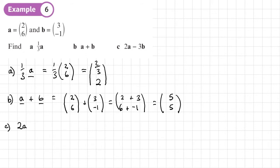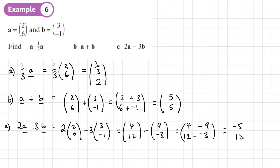Then in part C, we have 2A minus 3B. So what does this mean? This means two lots of A, which is 2, 6, minus three lots of B, which is 3, negative 1. So let's multiply them first. So 2 lots of 2, 6 becomes 4, 12. And then minus 3 lots of this vector here. So times that by 3, I will get 9, negative 3. So it becomes 4 minus 9 on the top row, 12 minus negative 3 on the bottom row. So 4 minus 9 is going to give me negative 5. 12 minus negative 3, 12 plus 3 is going to give me 15.